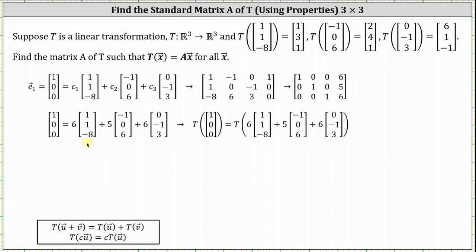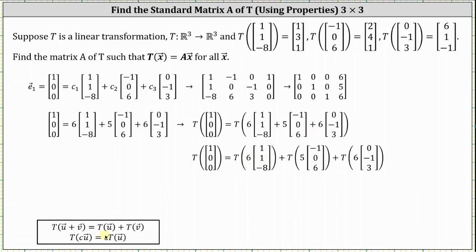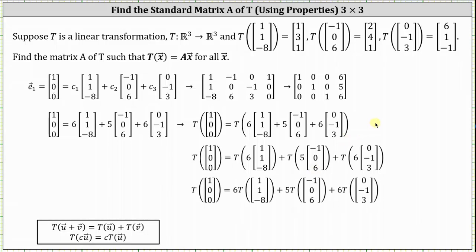Remember, our goal here is to find the transformation of the vector (1, 0, 0). So the next step is to take the transformation of both sides of the equation. From here, we apply the linear transformation properties on the right side: we write the transformation of the sum as a sum of three transformations, then factor out the constants of six, five, and six. Now we know the transformations of these three vectors: T(1, 1, -8) = (1, 3, 1), T(-1, 0, 6) = (2, 4, 1), and T(0, -1, 3) = (6, 1, -1).